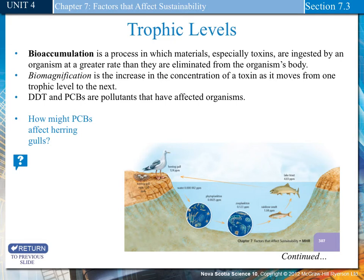Trophic levels also affect bioaccumulation. Bioaccumulation is the process in which materials, especially toxins, are ingested by an organism at a greater rate than they are eliminated from the organism's body. Biomagnification is the increased concentration of a toxin as it moves from one trophic level to the next.